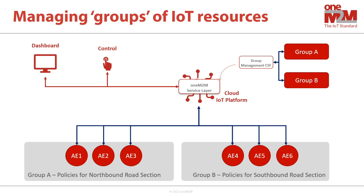Group A refers to AE1, AE2, and AE3 and controls the northbound road section. Group B refers to AE4, AE5, and AE6 and controls the southbound road section. From the control center, our operator can issue one command to switch on northbound lights. The group management common service function will take care of issuing commands to each light in group A. Yes, that seems to simplify life for our operator.